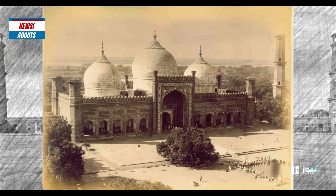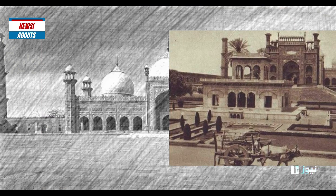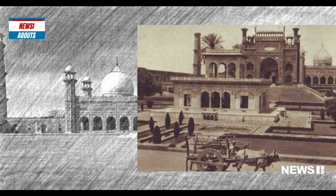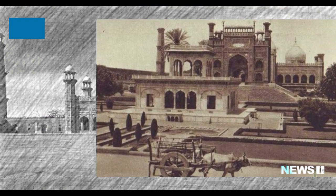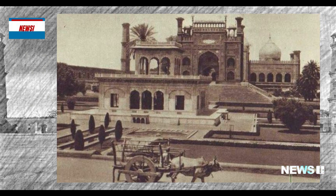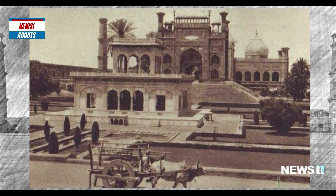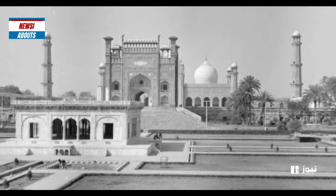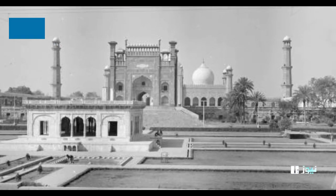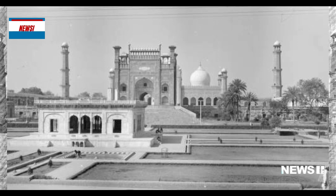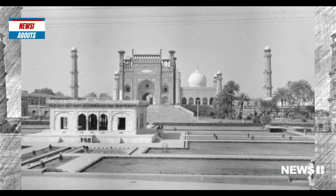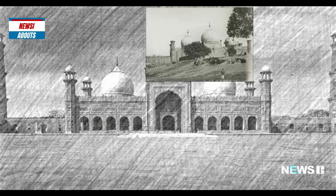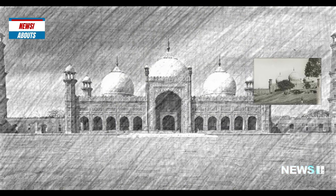The mosque's main entrance is located on the eastern side and is adorned with beautiful marble inlays and carvings. The entrance leads to a large courtyard, which is surrounded by arcades and is used for congregational prayers.